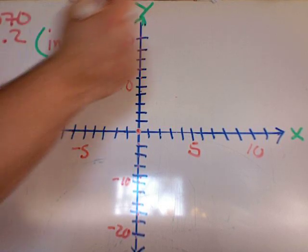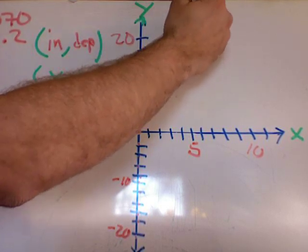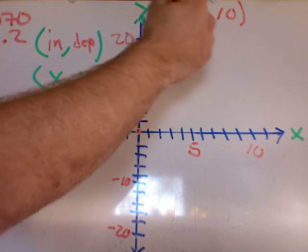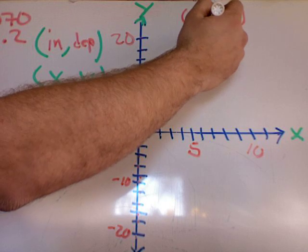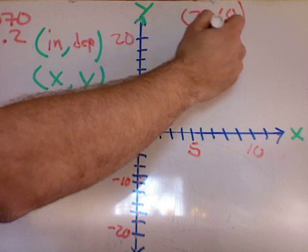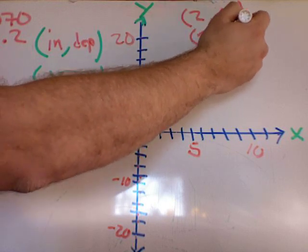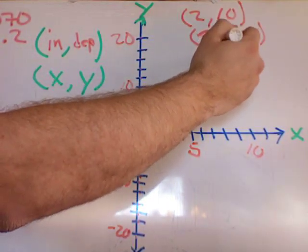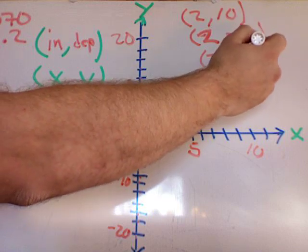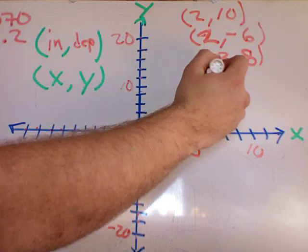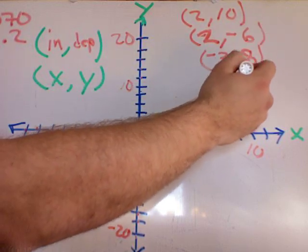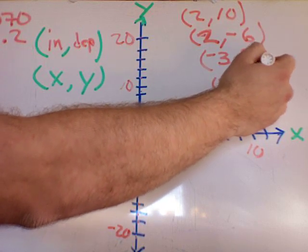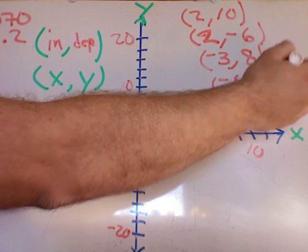So let's say I have these data points. I've got data point (2, 10), the data point (2, -6), (-3, 8), and (-4, -16).